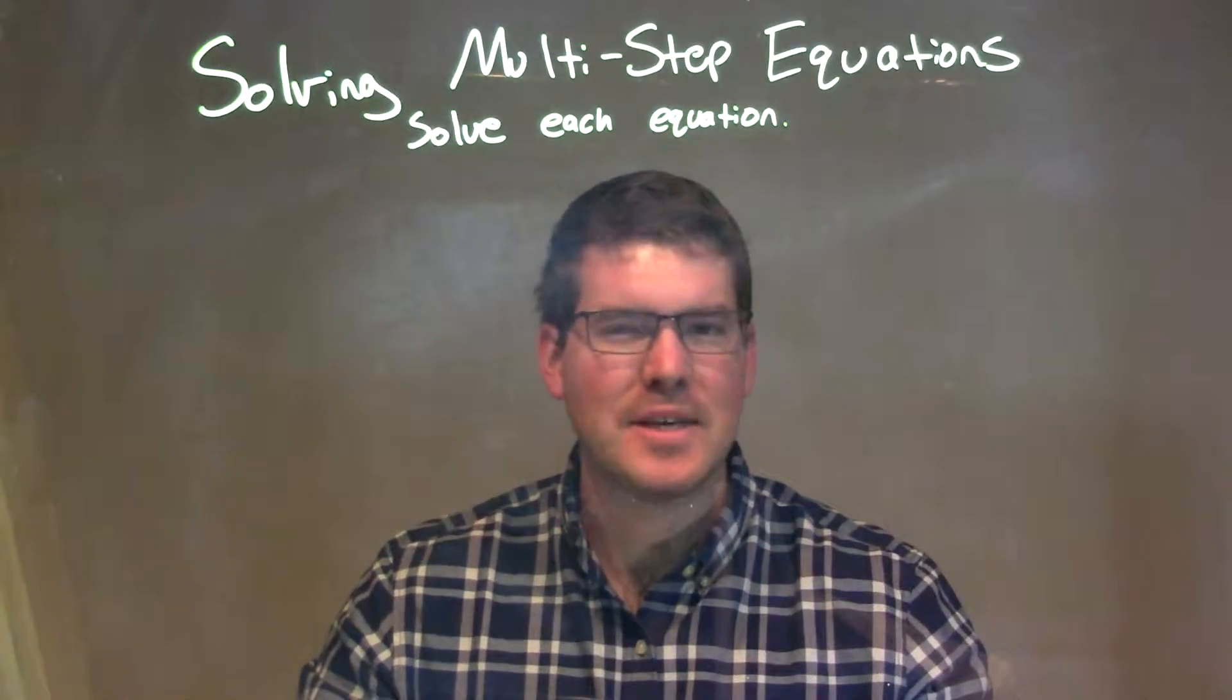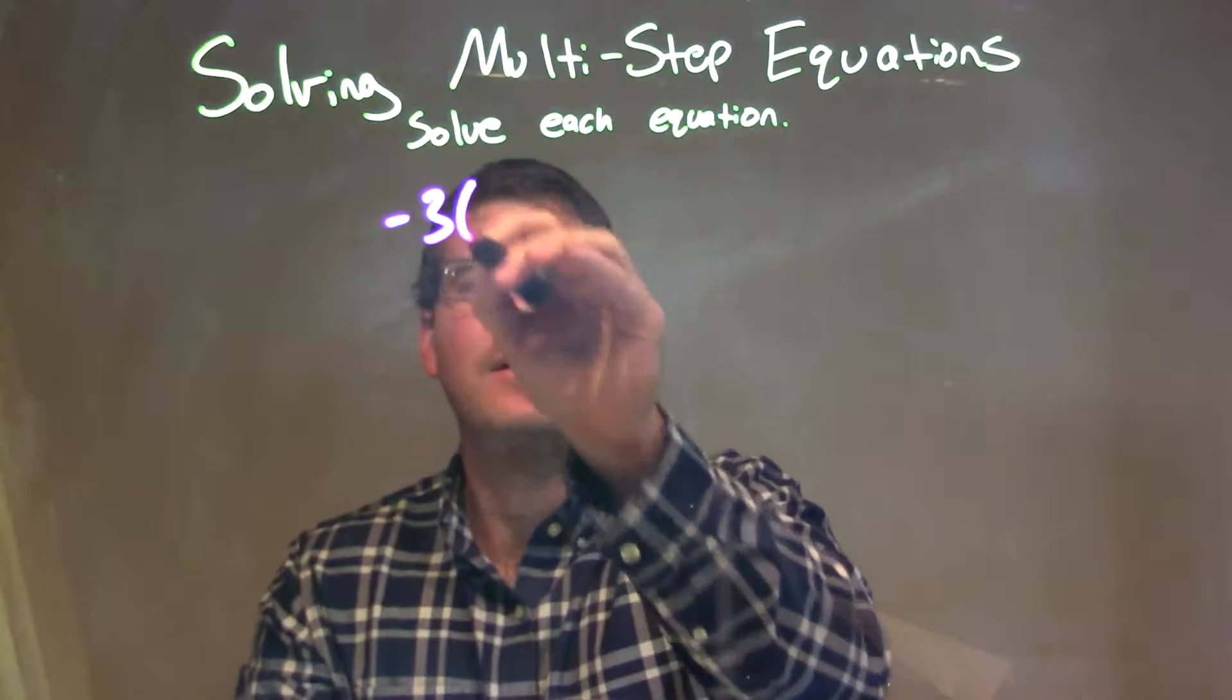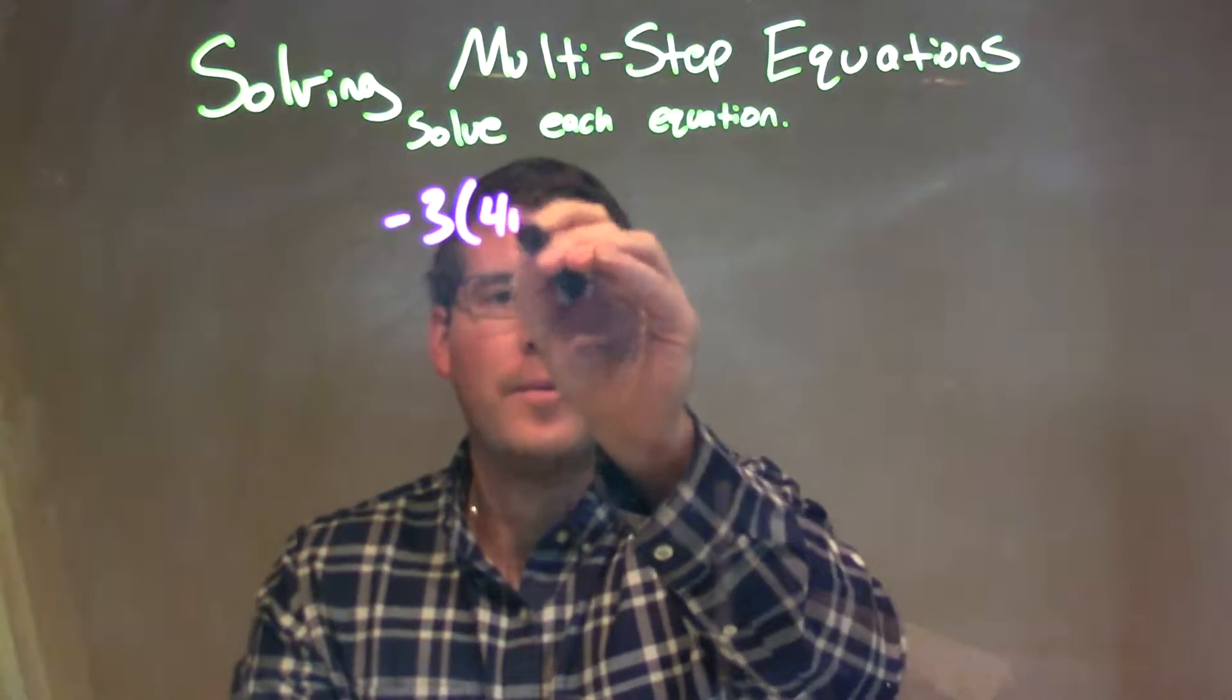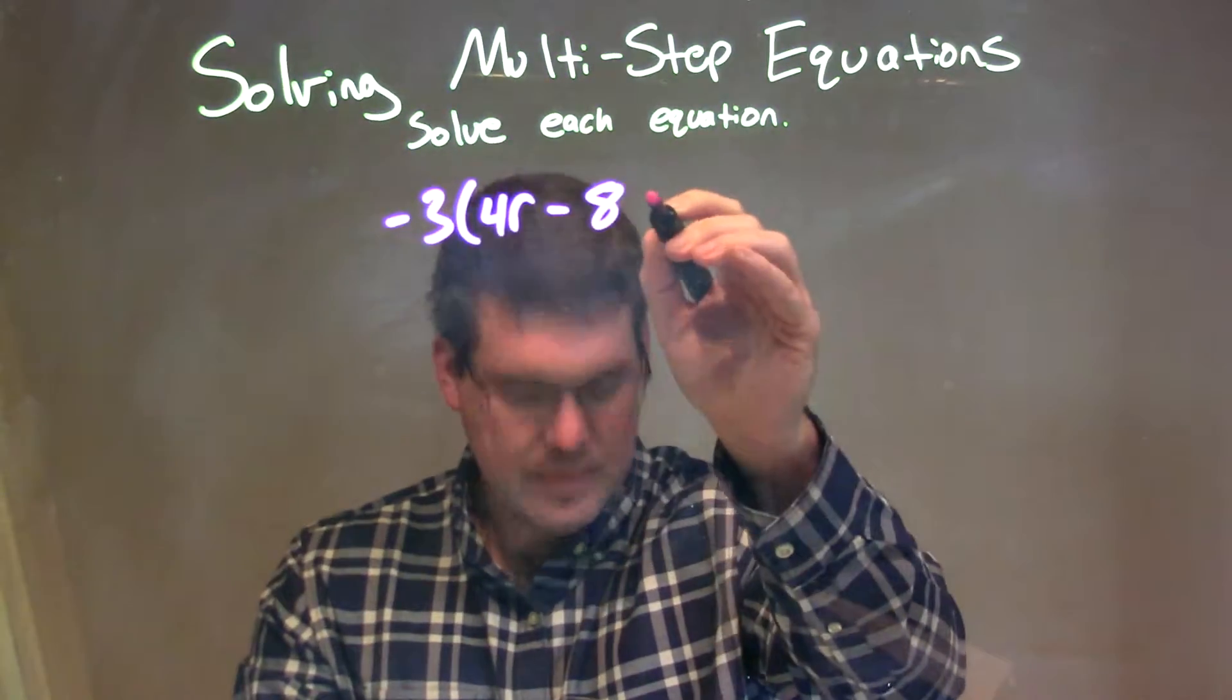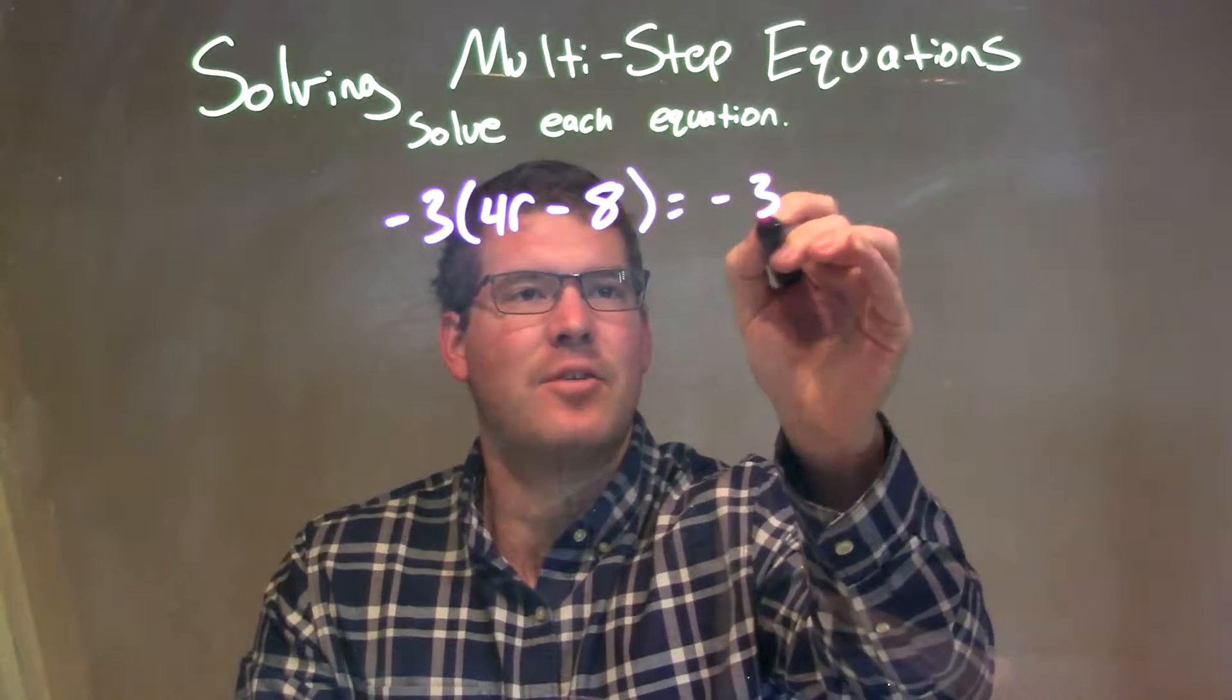So, if I was given this equation: negative 3 times 4r minus 8 equals negative 36.